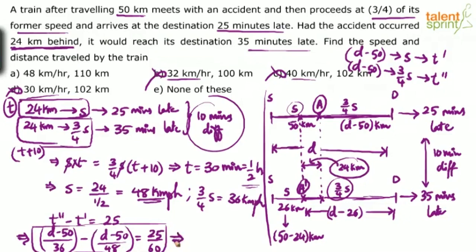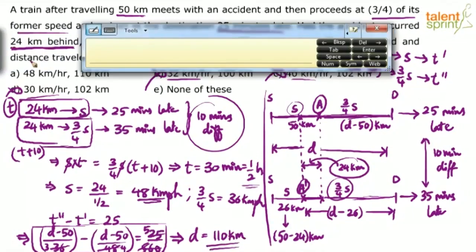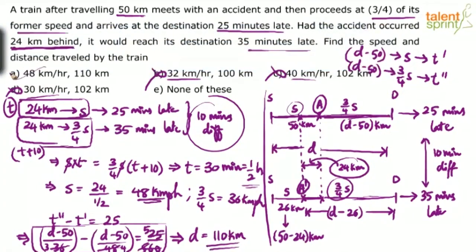Solving for D: (D − 50)/3 − (D − 50)/4 = 5 gives D − 50 = 60, so D = 110 kilometers. Therefore the speed is 48 kilometers per hour and the distance is 110 kilometers. Option A is the answer.